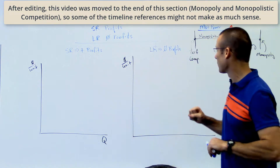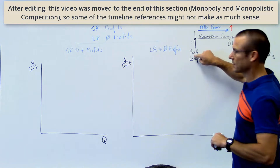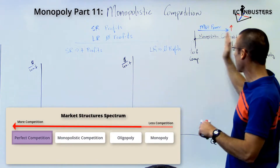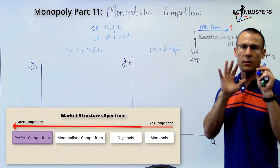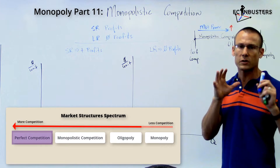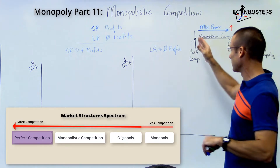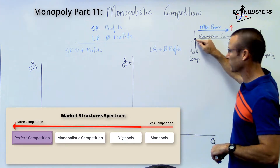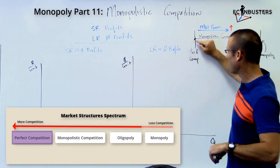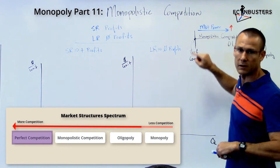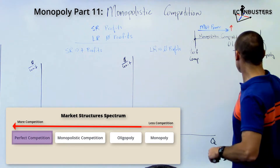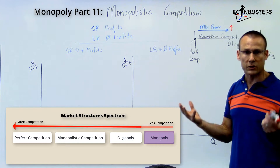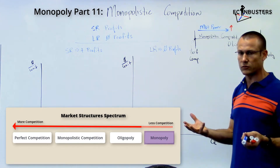Here's what we've done so far. We've spent a ton of time on perfect competition — it's on the far left of my market structure spectrum. Hopefully you've seen some other videos and you've seen this spectrum. So perfect competition is far left, and then we spent a ton of time on monopoly, the far right of the market structure spectrum.